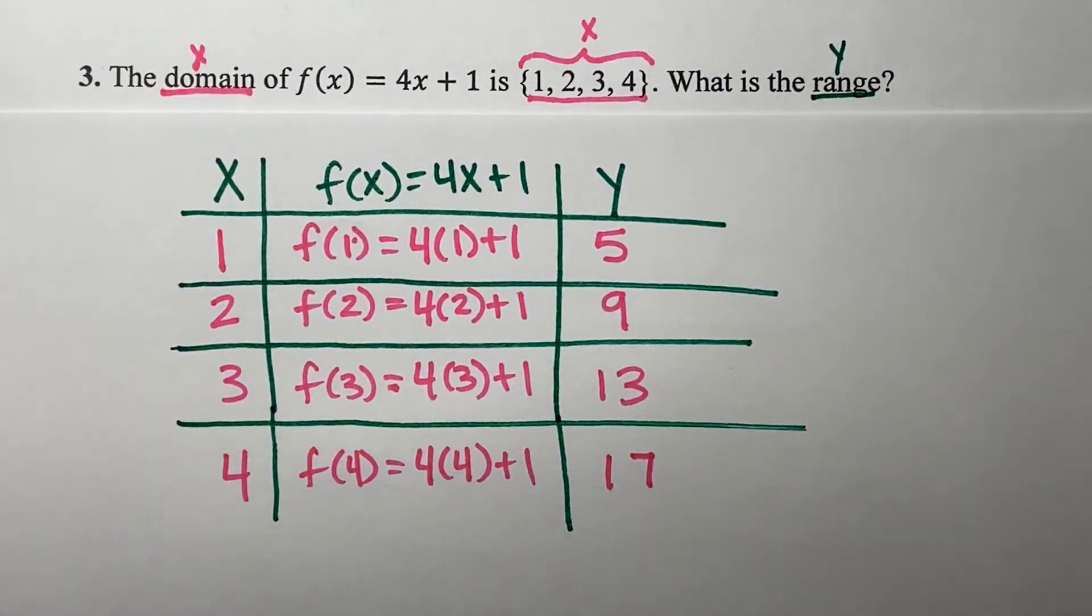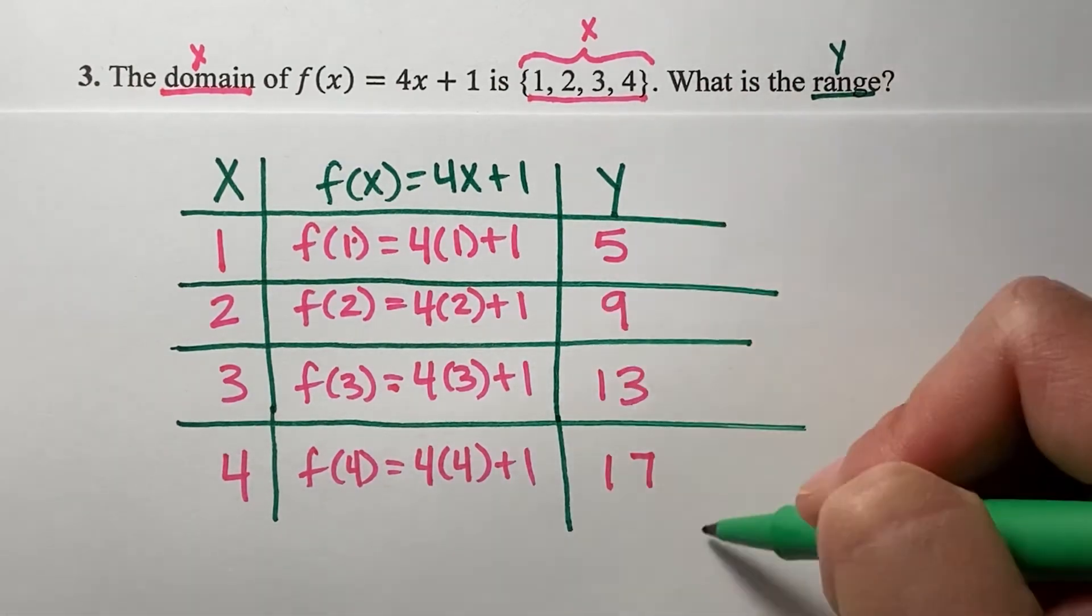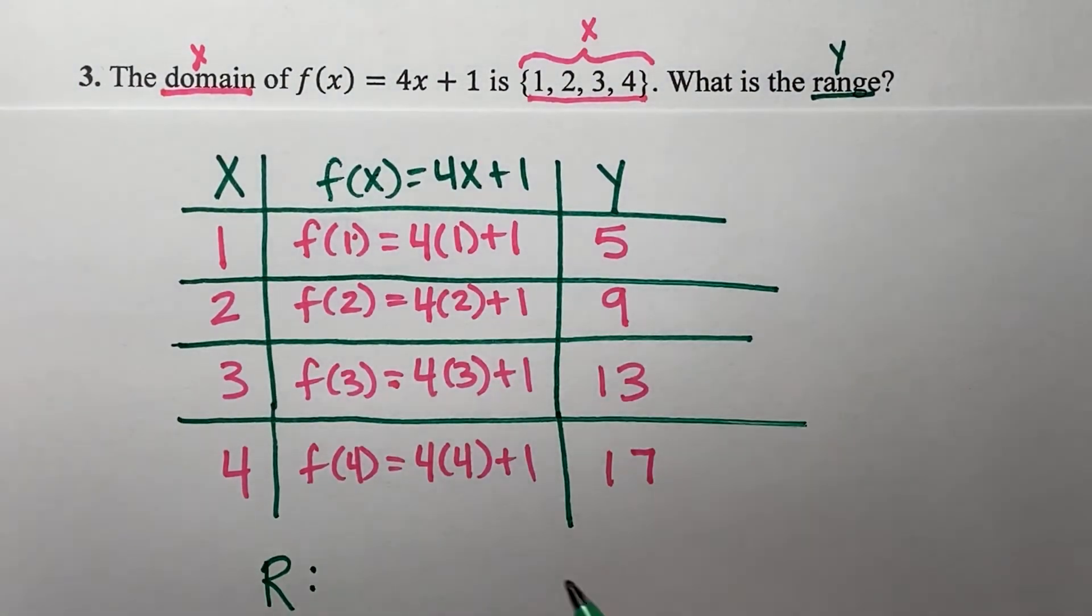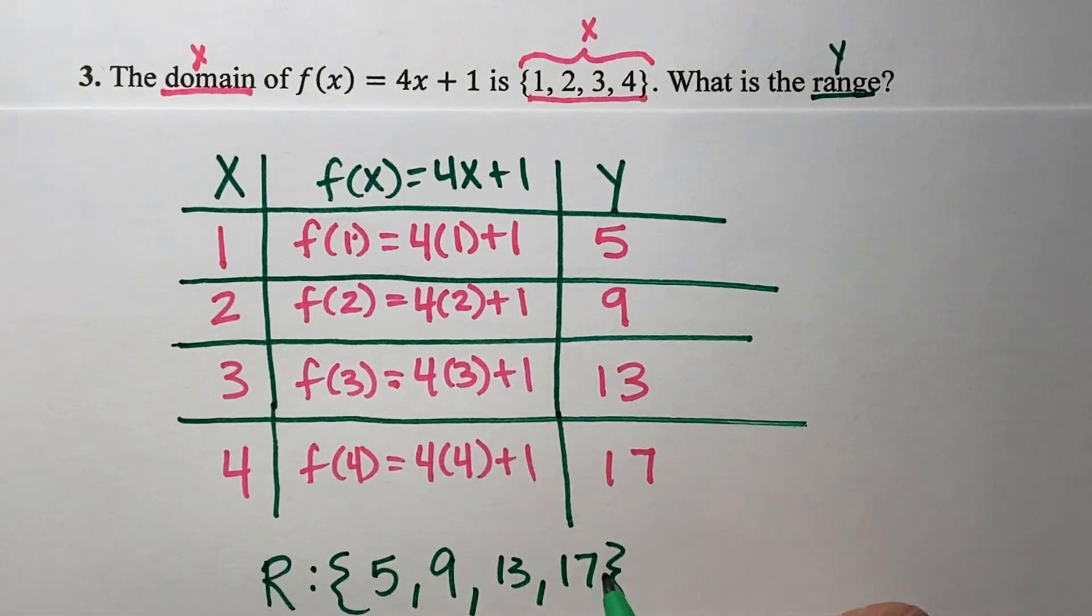Here, to answer my question, what is the range, these are my range values. So I will write R. And you write the range in order from least to greatest: 5, 9, 13, and 17. There is my range.